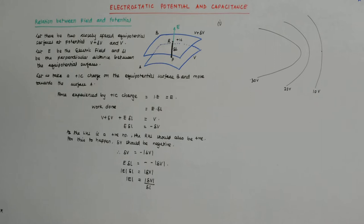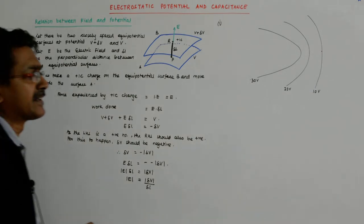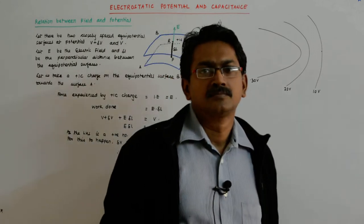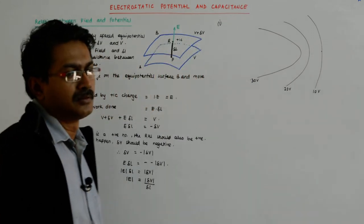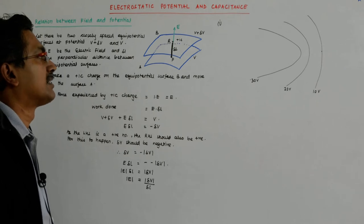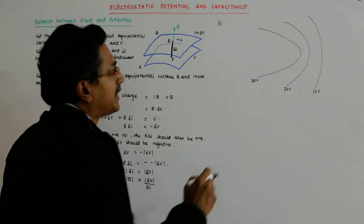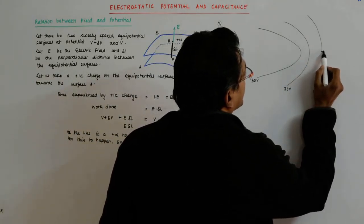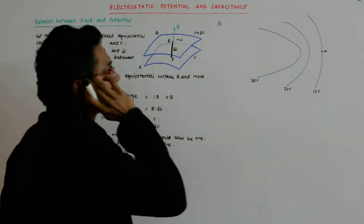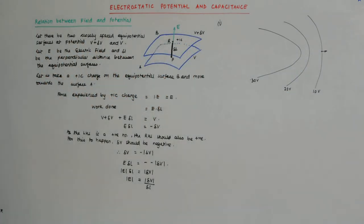What is the direction of electric field at this point? How do I find that out? What will be the direction of electric field at this point? It will be, first of all, perpendicular to this. It has to be perpendicular to this.